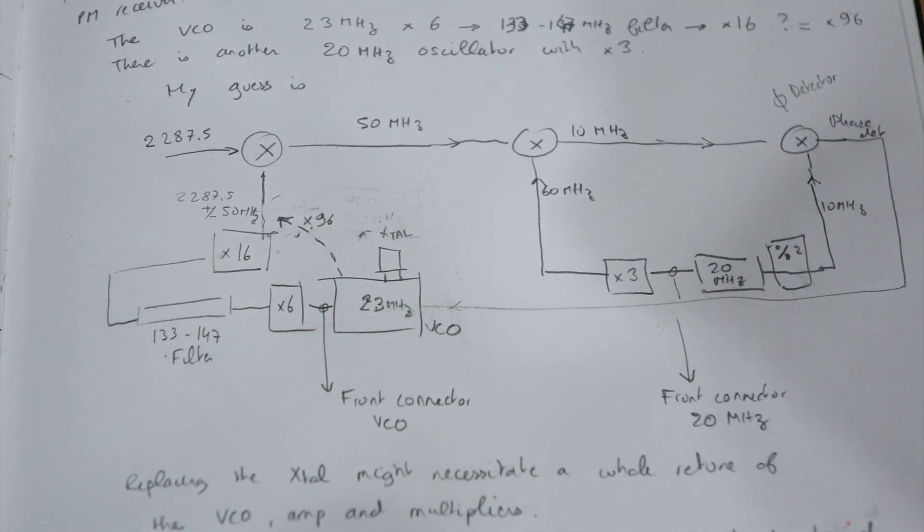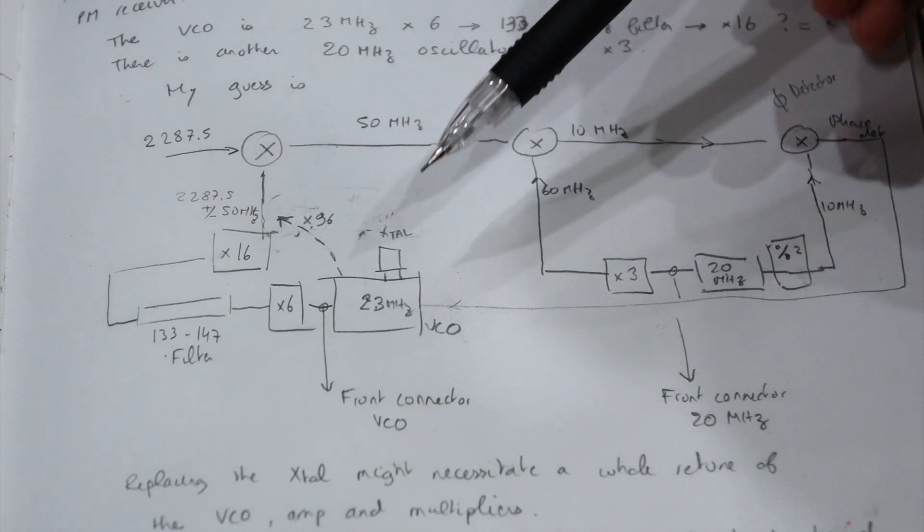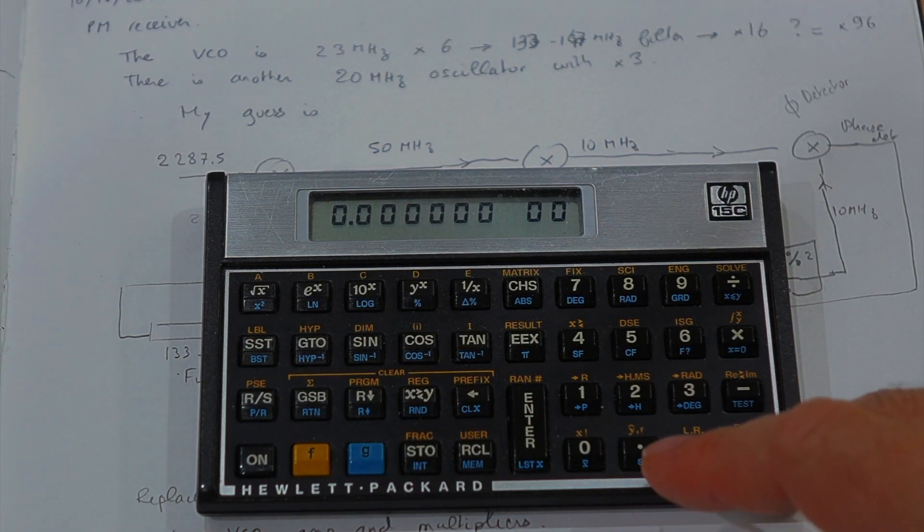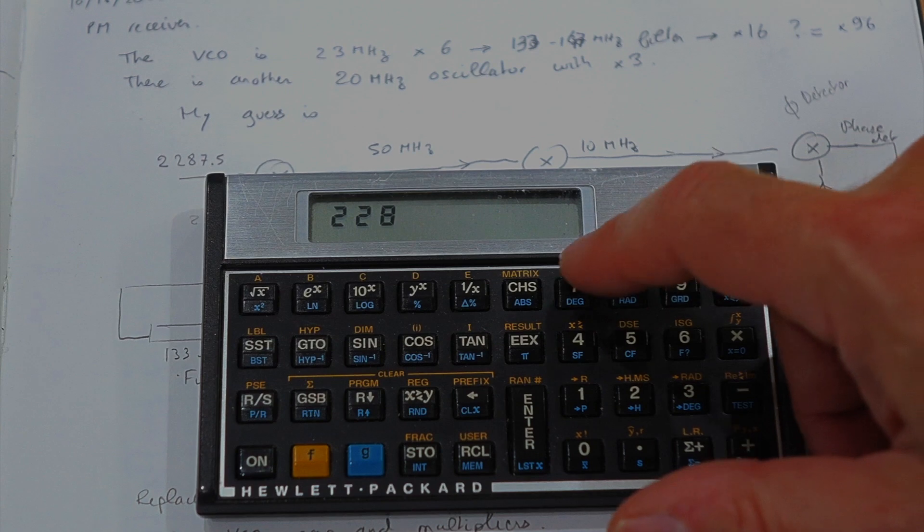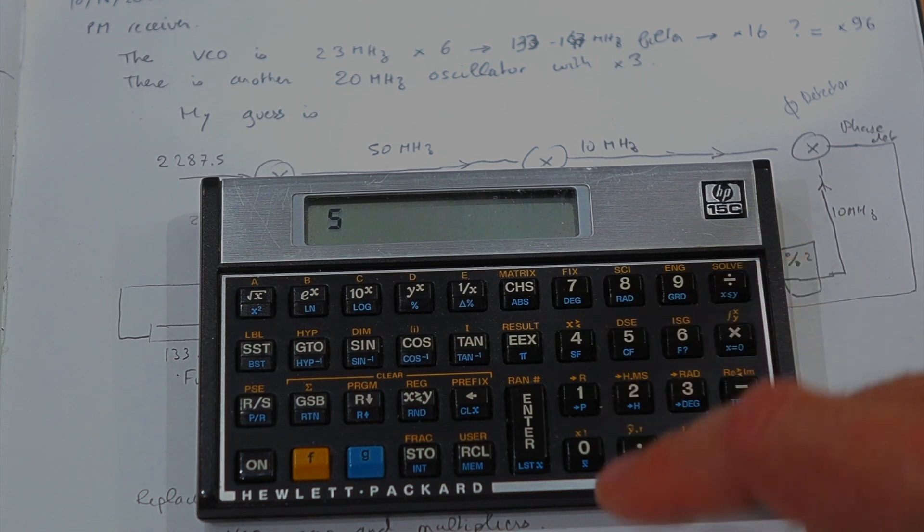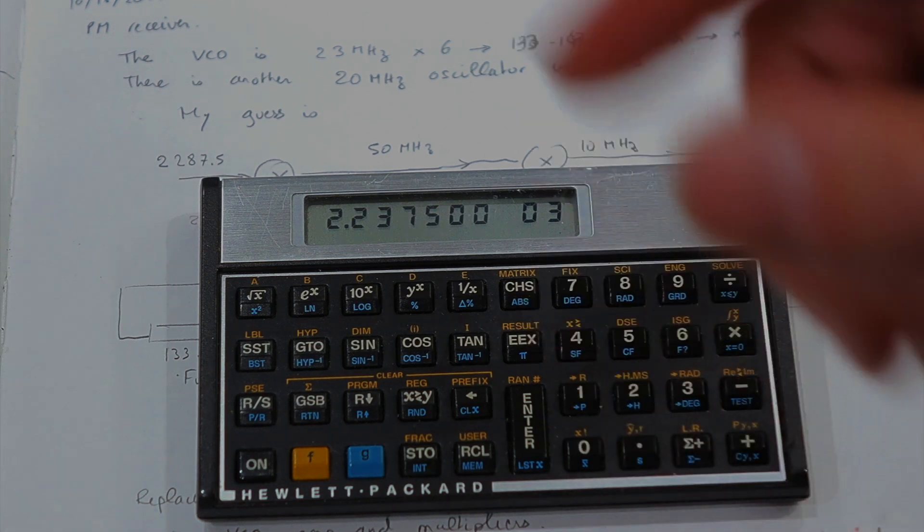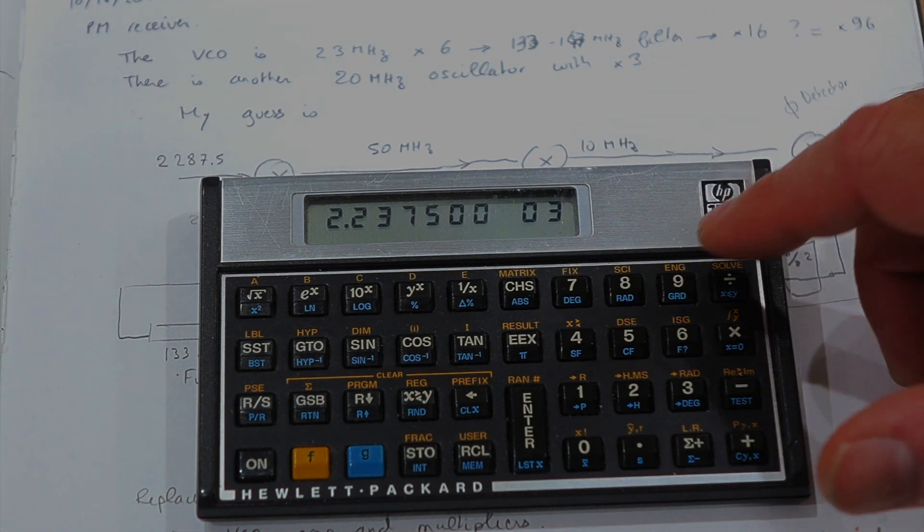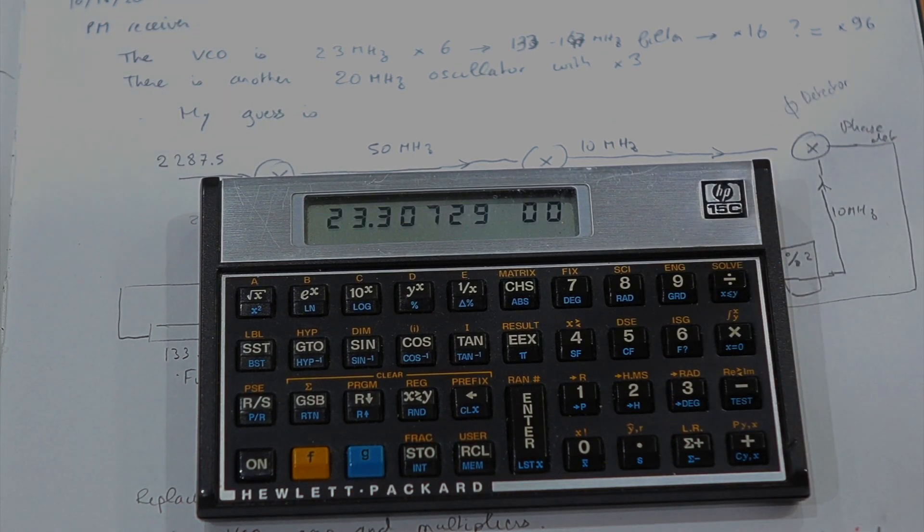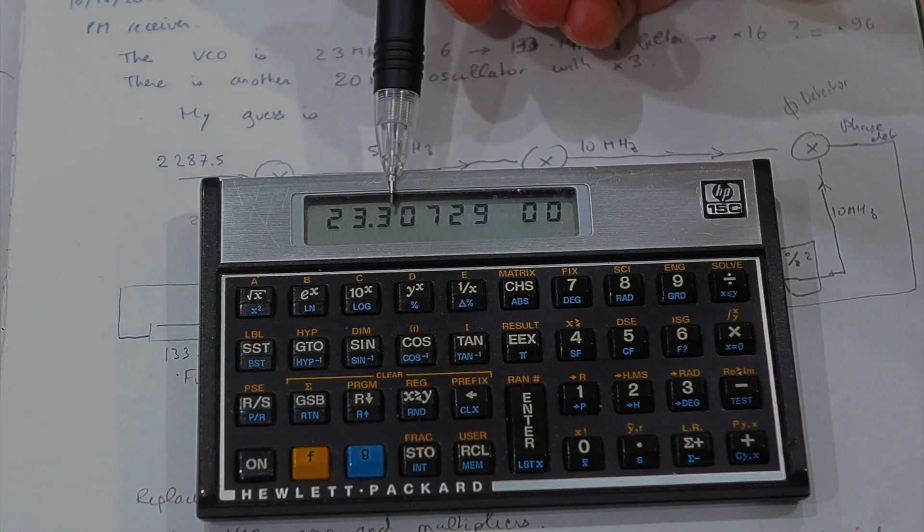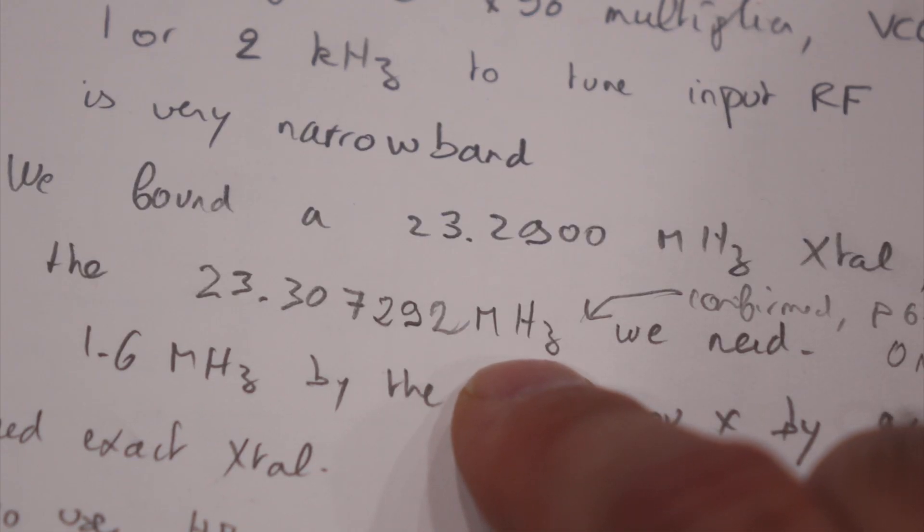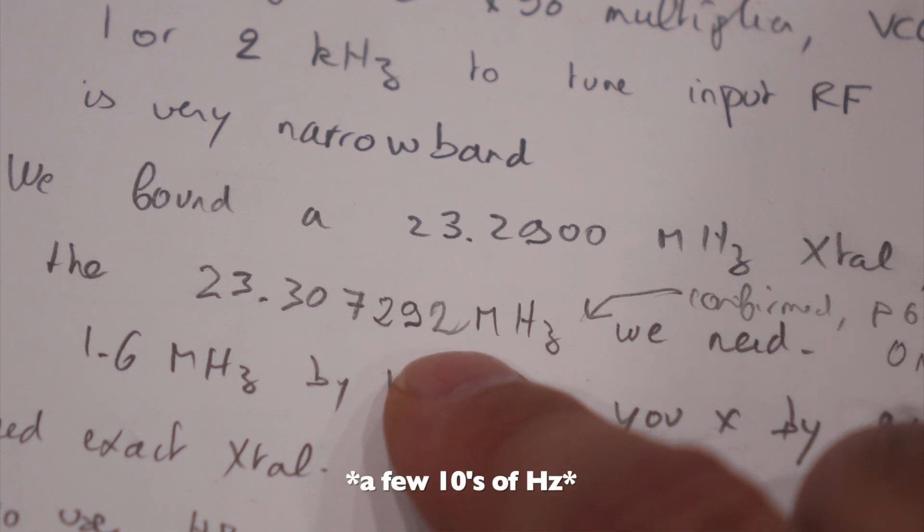So we were actually right. In order to change the frequency of the receiver, all we have to do is change the first conversion. The second one is fixed. So to calculate the new crystal we need is fairly easy. We want to receive at 2287.5 MHz. And we want an intermediate frequency of 50 MHz. So we subtract that from the carrier. That should be our local oscillator. And since it's multiplied by 96 from the crystal, we just divide it by 96. And this is our crystal frequency that we should get, 23.30729 MHz. That's definitely a special order crystal.